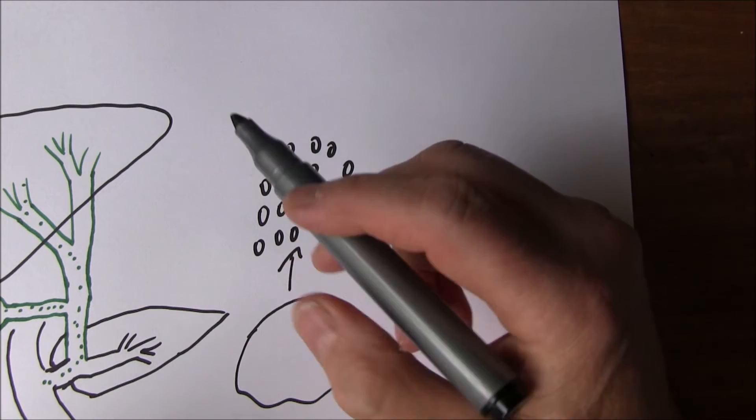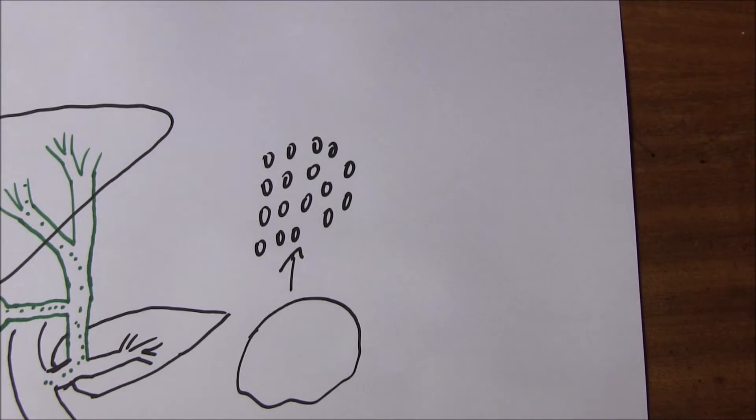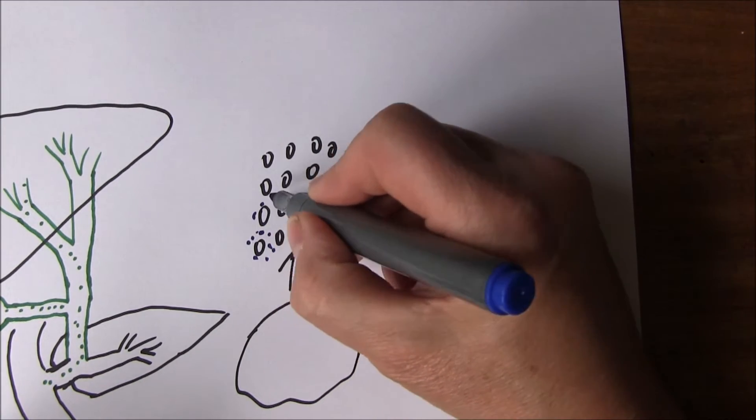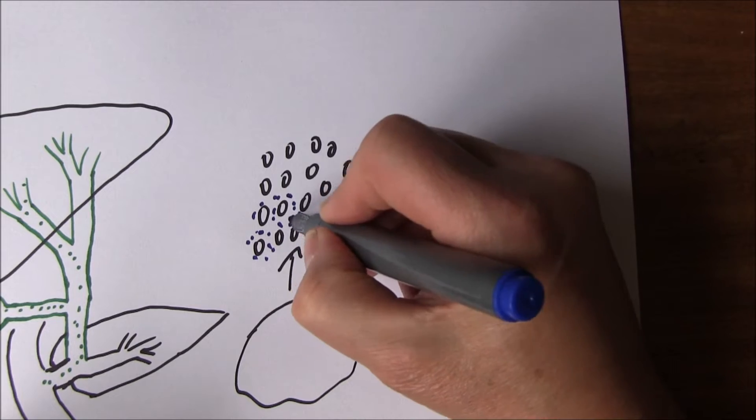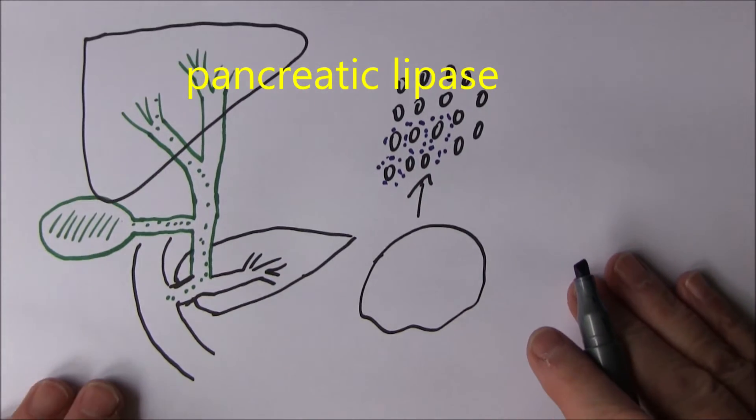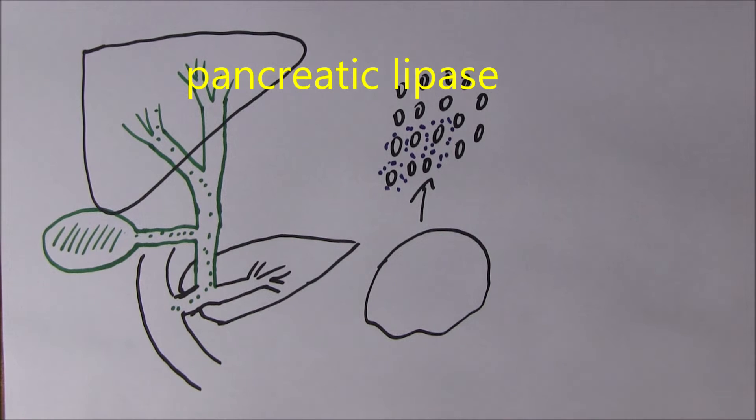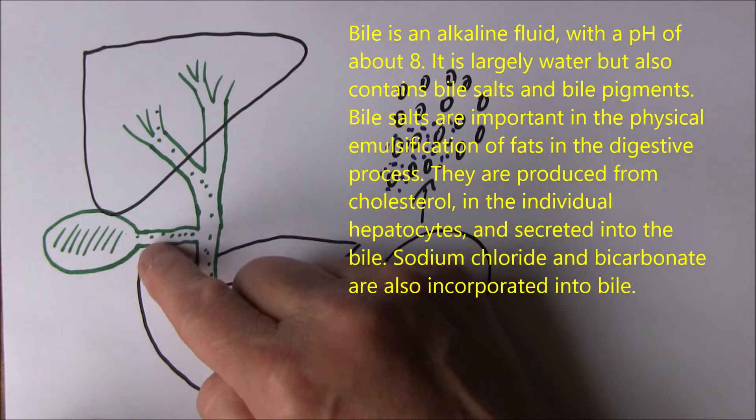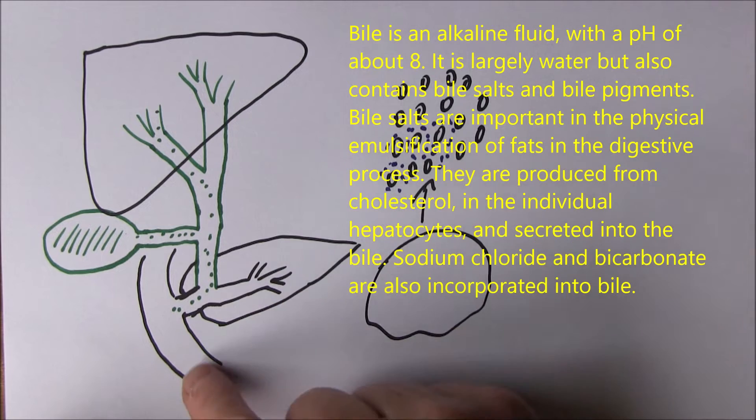It doesn't digest the fat, it just breaks it down. It emulsifies the fat so the fat becomes emulsified, and that greatly increases the surface area. Then the pancreatic lipase, the digestive enzyme, can get at it much easier because it's got a much increased surface area. Bile is an alkaline fluid because we need an alkaline environment in the duodenum to optimize the pH conditions for the pancreatic enzymes.